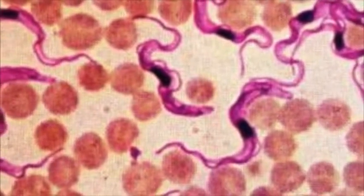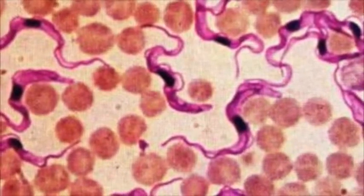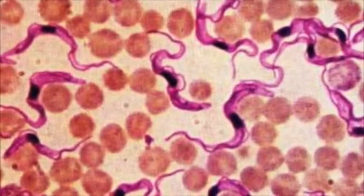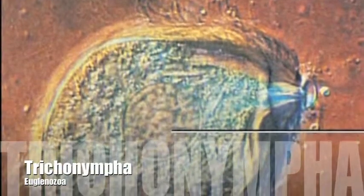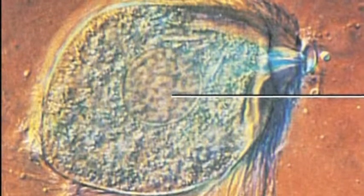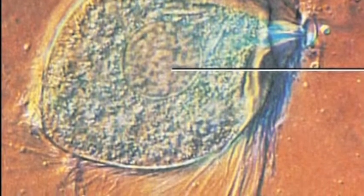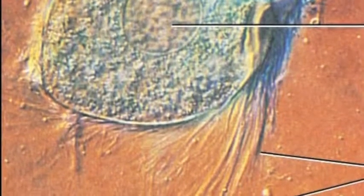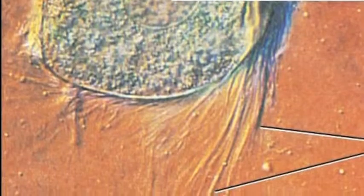The association of termite and Trichonympha is an example of obligate mutualism, in which neither organism is capable of surviving without the other. Termites lack the enzymes to metabolize cellulose, a major component of wood. Wood particles ingested by termites are engulfed by Trichonympha, whose enzymes break the cellulose into soluble carbohydrates that are released for use by the termite.